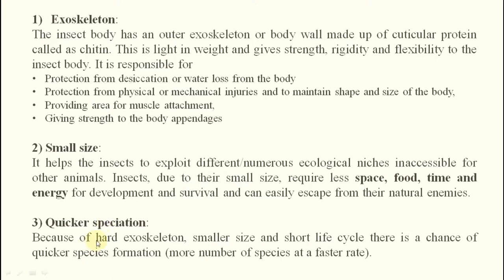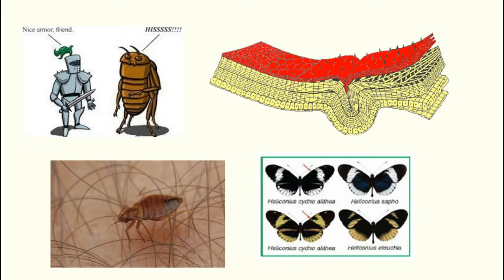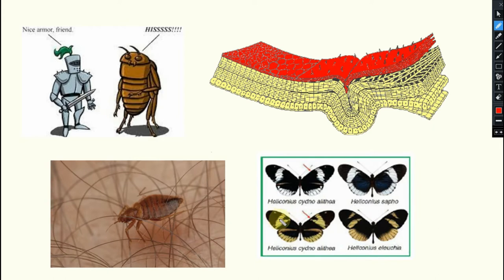Third is quicker speciation. Due to high evolutionary rate and short life cycles, insects can quickly generate different species. For example, the same genus may include different species with different wing markings or physiology. Within a short time period they can create more species, which helps increase their population. In some cases, as we'll discuss in the IPM course, this leads to new biotypes that can escape from pesticides or resistant variety use.